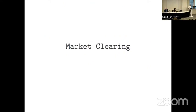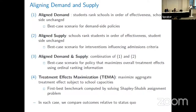Let's clear the market. I look at four different counterfactual allocations. The first is aligned demand — students rank schools in order of effectiveness, supply side unchanged. The second is aligned supply — schools rank students in order of effectiveness, student side unchanged. The third is both together, still in the ordinal domain. And the fourth is a central planner computing the allocation that maximizes overall treatment effects of kids in New York City — this is a benchmark.